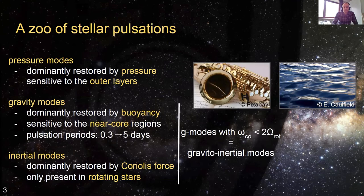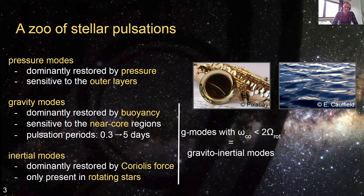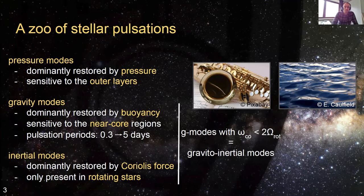There are many different kinds of pulsations, several of which I will mention today. The first are pressure modes — pulsations dominantly restored by pressure, basically sound waves. In the types of stars we study, these are mostly sensitive to the outer layers of the star. A second main class are gravity modes, dominantly restored by buoyancy, very similar to the types of waves in a body of water. In our BAF-type stars, these pulsations are mostly sensitive to the near-core stellar regions and have very long pulsation periods, anywhere between 0.3 and 5 days.